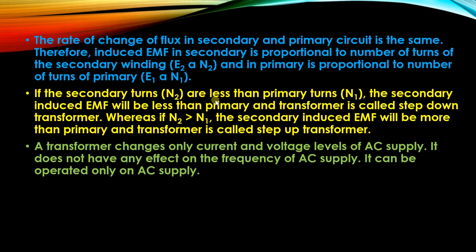The transformer changes only the current and voltage levels of the AC supply; it does not have any effect on the frequency. Whatever frequency is supplied at the input, the same frequency remains on the output side. For example, if we supply 50 Hz on the primary side, we will get 50 Hz on the secondary side.